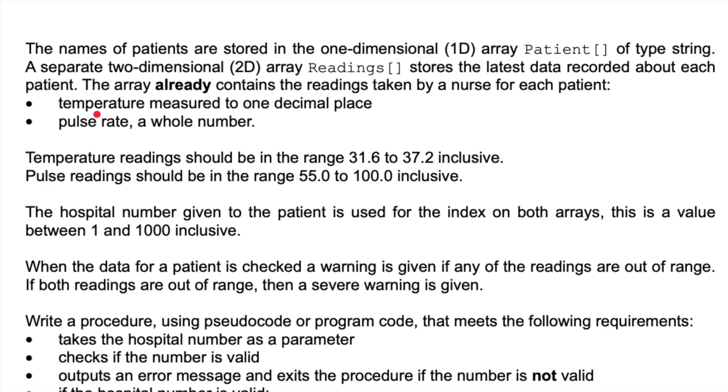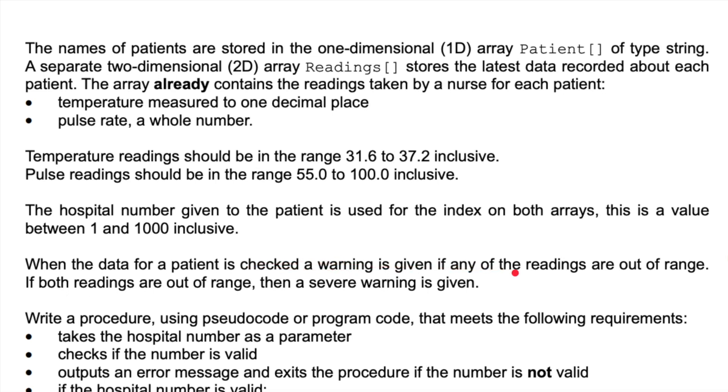When the data for a patient is checked, a warning is given if any of the readings are out of range. If both readings are out of range, a severe warning is given.